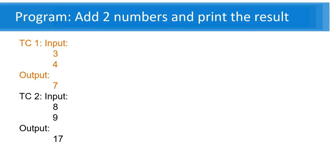The first program is very simple: add two numbers and print the result. You might already know how to solve this, but let's go through the thinking process. The input is given as 3 and 4 and the output is 7 — that's test case one. When you run the program with 3 and 4, the output should be 7. For test case two, give 8 and 9 and you should see 17. You can pause the video and think, or let's discuss the solution.